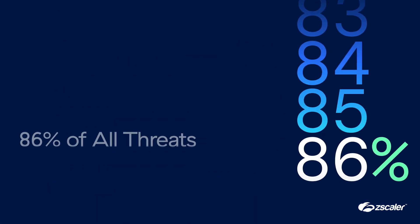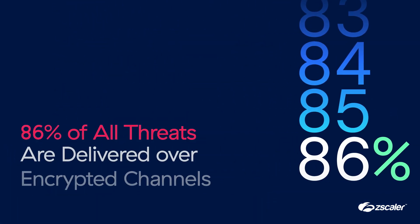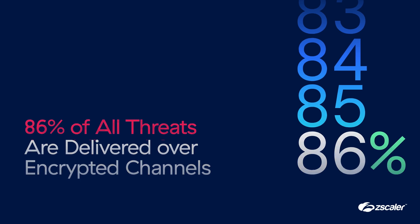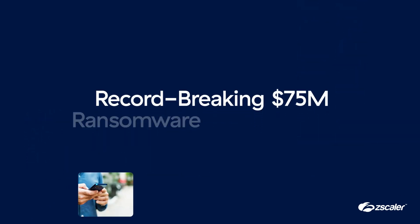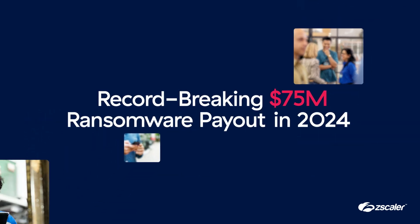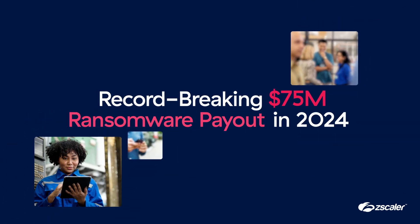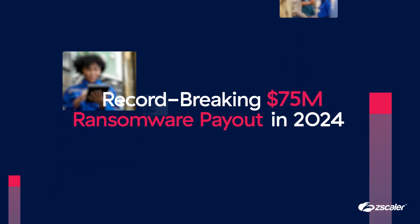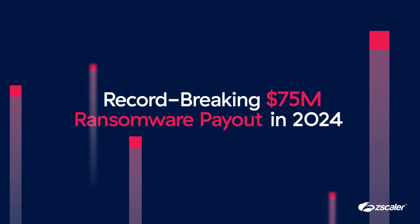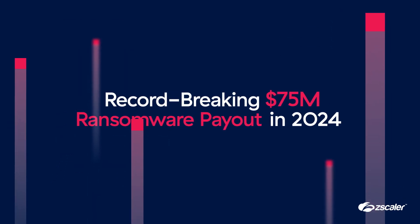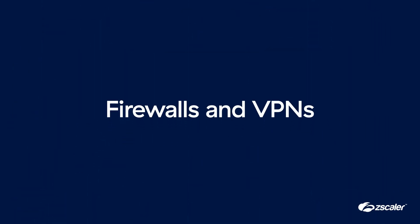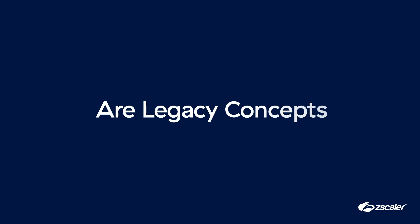Threat actors have taken advantage of this complexity. They're constantly evolving, using encrypted channels, AI, and automation to their advantage. And they're harder to stop and more damaging than ever before. Yet many companies still rely on legacy security technologies like firewalls and VPNs built for another era.